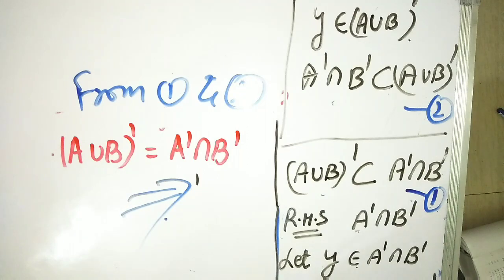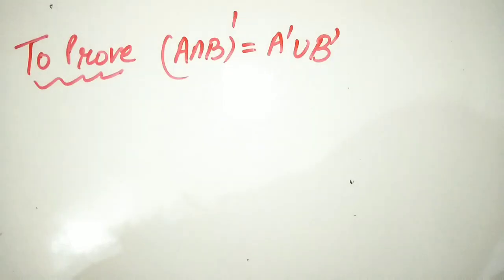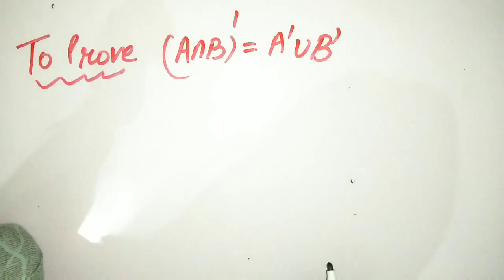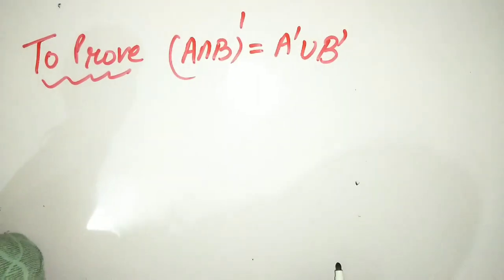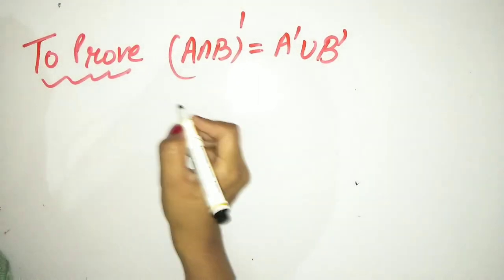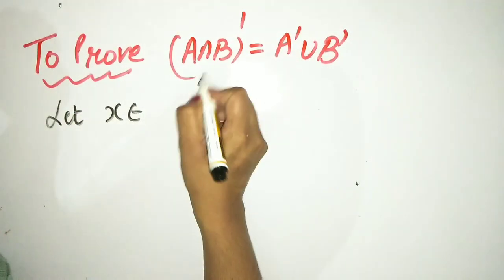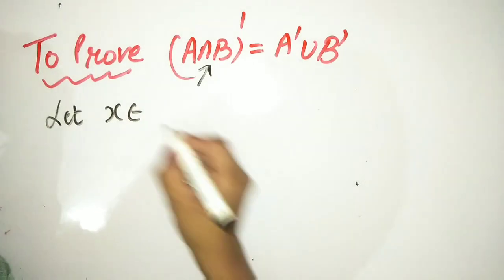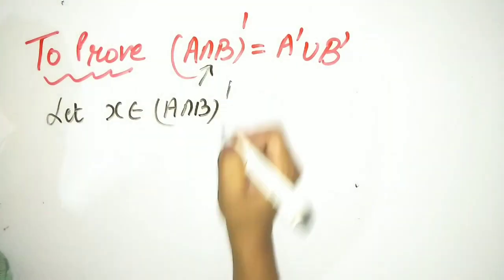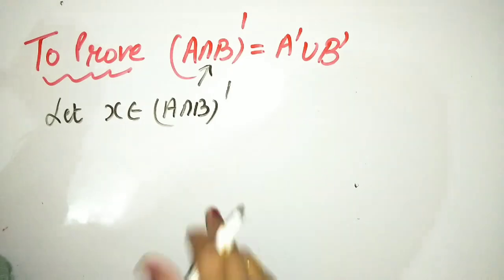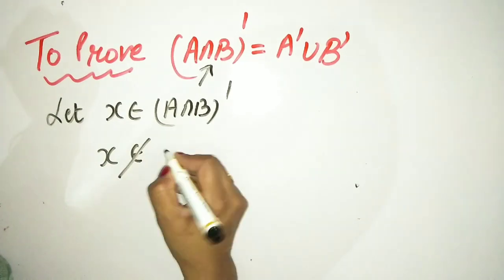Now students, we have two laws. We have another law to prove, and I will give you this as homework. The second law is: A intersection B complement equals A complement union B complement. To prove this, let x belong to A intersection B complement. If it belongs to the complement, it means it doesn't belong to A intersection B.